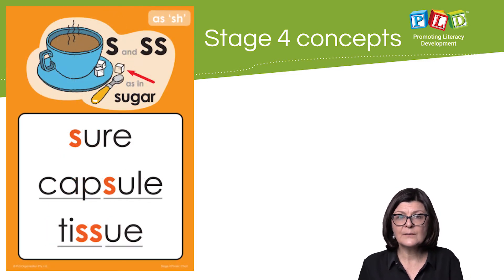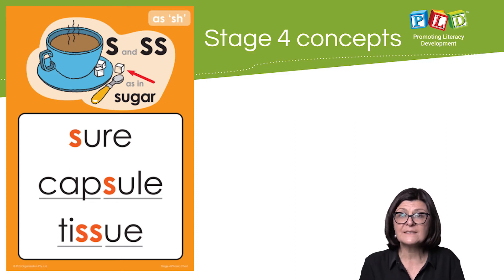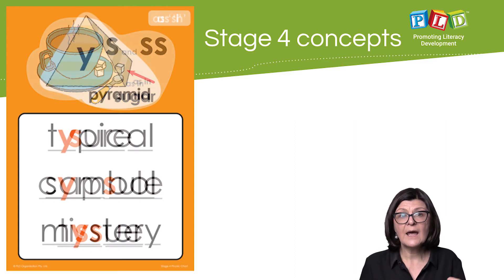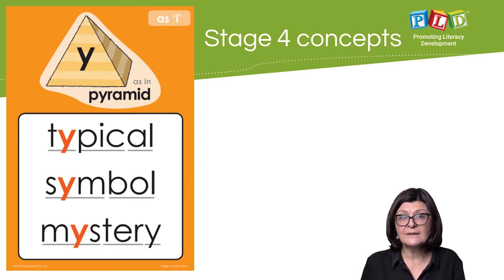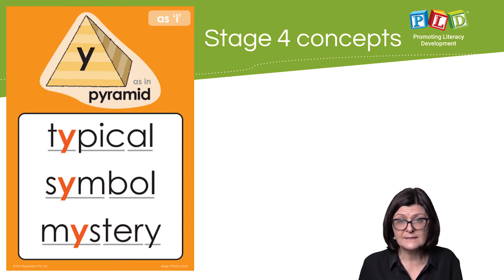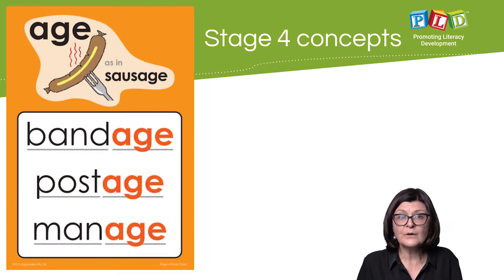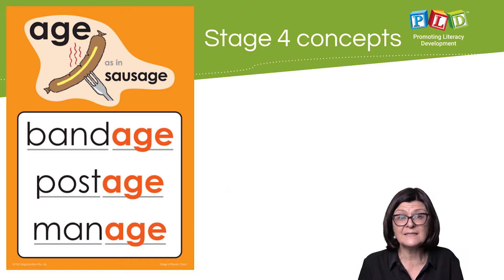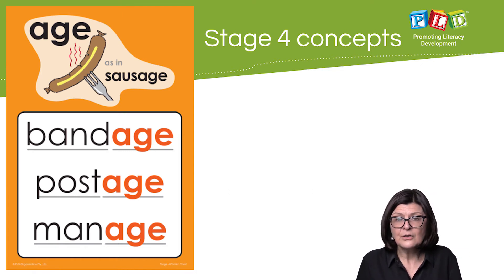'S' and double 'S' with a range of these words is presented as the 'sh' sound. 'Y' with the pronunciation of the 'i' sound in this set of words. '-age' words pronounced as 'idge' — such as 'bandage', 'postage', 'manage' — the '-idge' group.